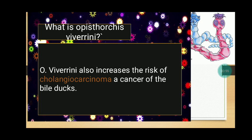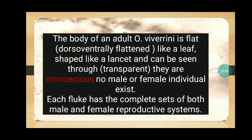Opisthorchis viverrini also increases the risk of cholangiocarcinoma, a cancer of the bile ducts. The body of an adult Opisthorchis viverrini is flat like a leaf, shaped like a lancet, and can be seen through as transparent. They are monoecious — no male or female individual exists separately. Each fluke has a complete set of both male and female reproductive systems.